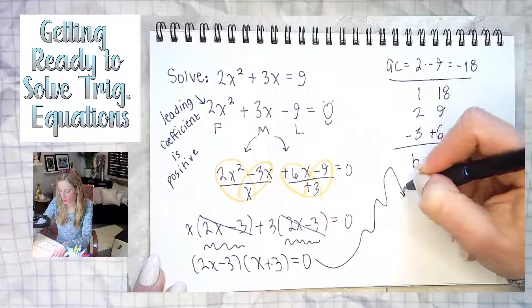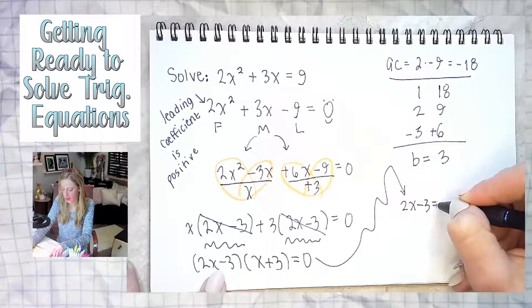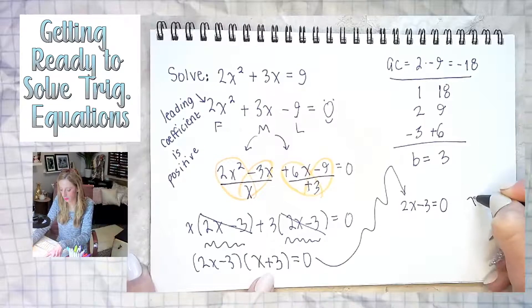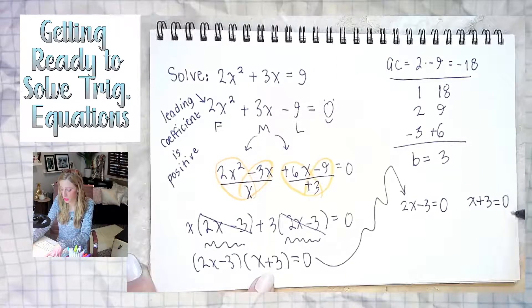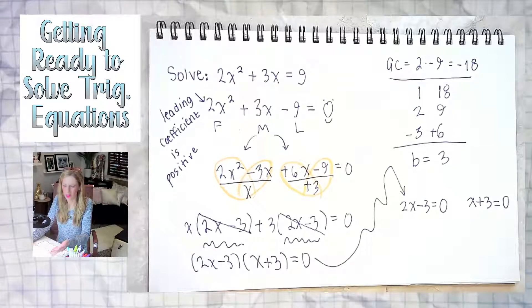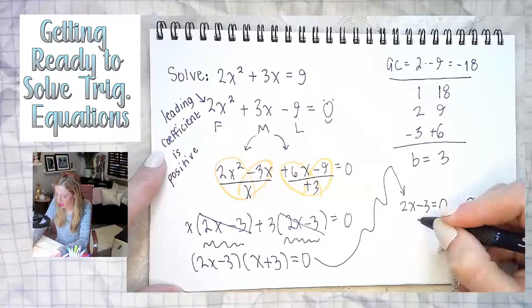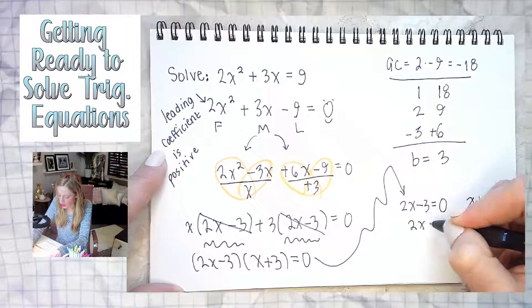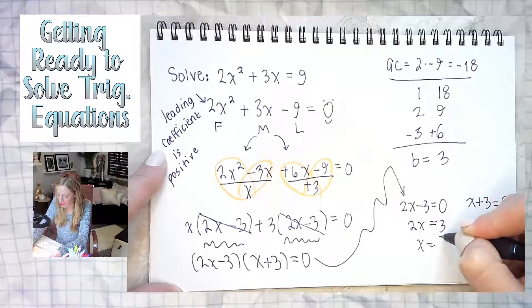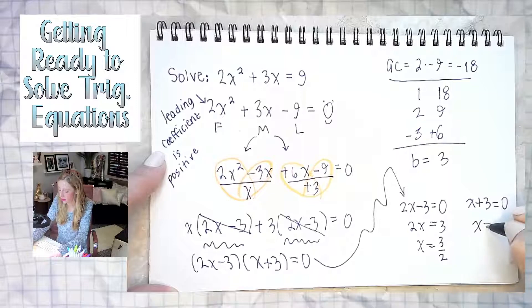Now when we set each of these linear factors equal to zero, one at a time — this is called the zero product property. This only works when it's equal to zero; it's not the 10 product property. If they both equal 10, that product equals 100, which makes no sense. So: 2x minus 3 equals zero gives x equals 3 over 2 — leave it as a fraction, fractions are our friends. And x plus 3 equals zero gives x equals negative 3.